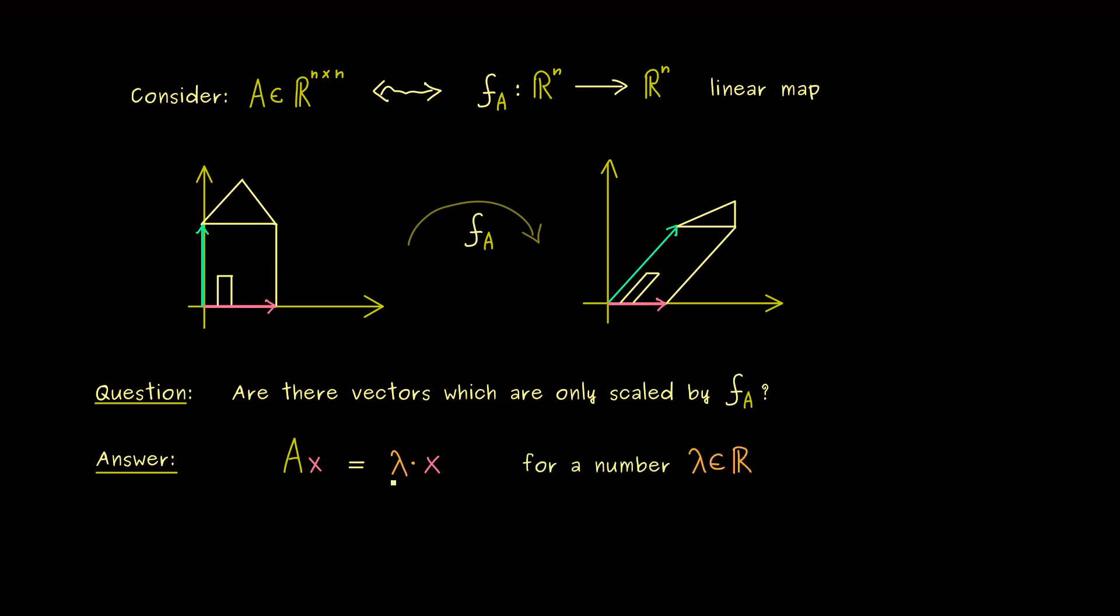And of course, scalar just means it could be any real number. In particular, this equation here means that the direction could also flip, namely when the scalar is negative. Moreover, in the case that the scalar is zero, we have that the direction collapses to the origin. However, this is also in the spirit of this question, because we have only scaling involved.